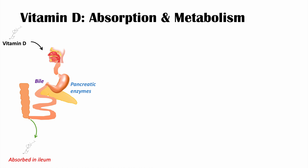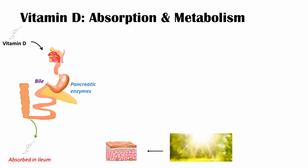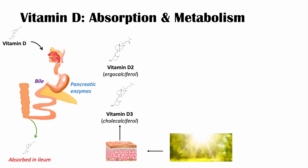The other mechanism to get vitamin D is through endogenous synthesis. When the skin is exposed to sunlight, it produces vitamin D3, cholecalciferol. We can get vitamin D2 and vitamin D3 from our diet, but from the skin through endogenous synthesis, it is vitamin D3.